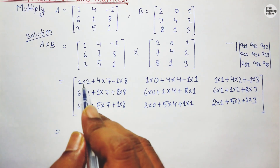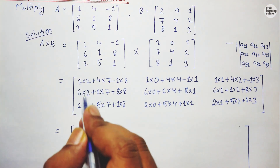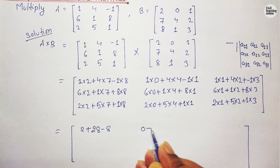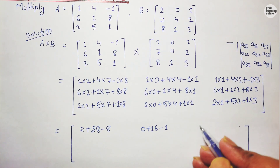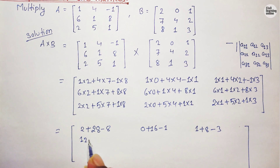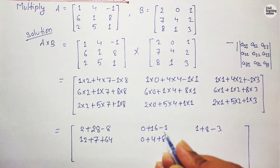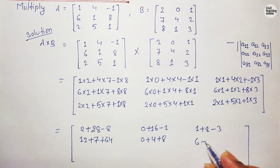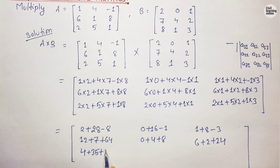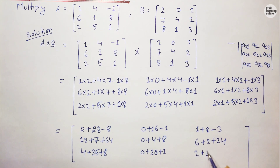Now what we will do: we simply multiply and perform addition and subtraction. So we will have: 2×2=4, plus 4×7=28, minus 8 gives the first element. Then 0 plus 16 minus 1, and 1 plus 8 minus 3. For the second row: 12 plus 7 plus 64; then 0 plus 4 plus 8; then 6 plus 2 plus 24. For the third row: 4 plus 35 plus 8; then 0 plus 20 plus 1; then 2 plus 10 plus 3.